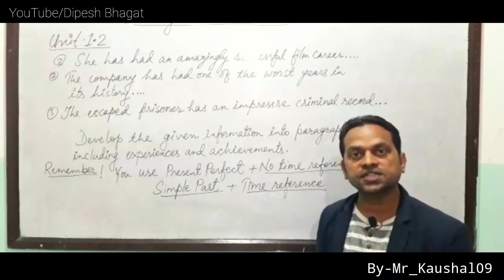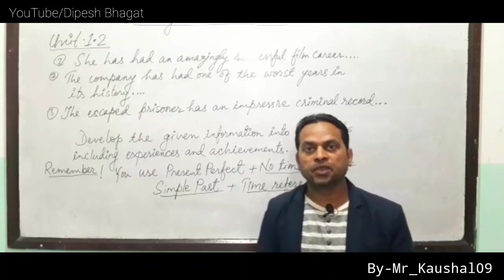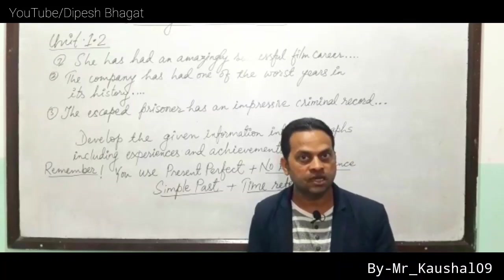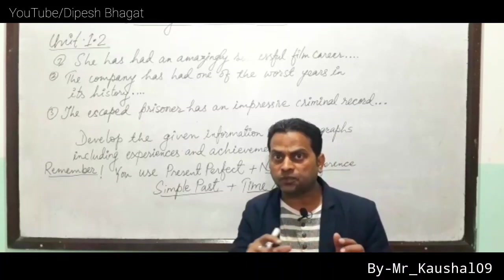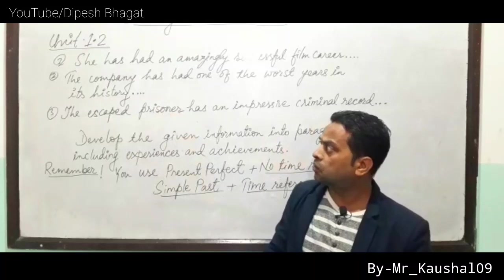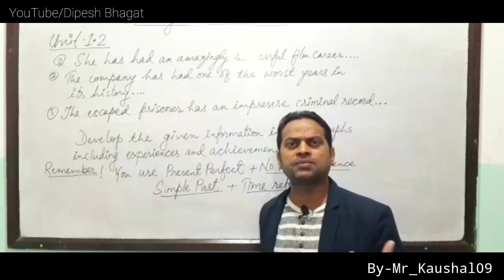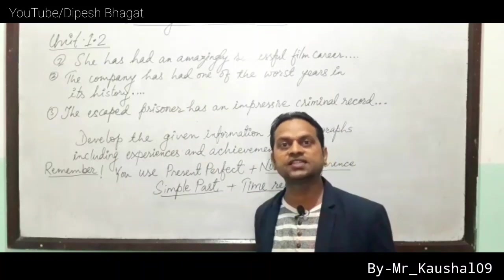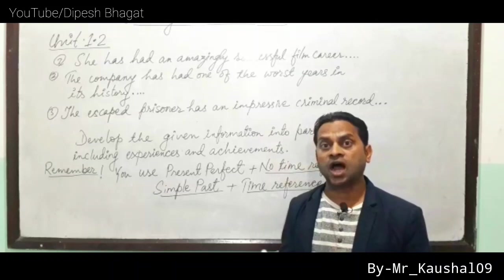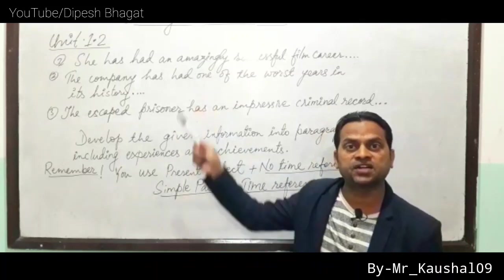In unit 1.2, some sentences are given that provide information about different individuals, professionals, and personalities. We have to make a list of experiences and achievements of these individuals, and then develop those into a paragraph. The paragraph may have five to seven sentences, and almost all of those sentences must be either Simple Past or Present Perfect, since we are talking about experiences and achievements.